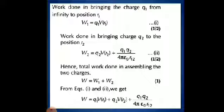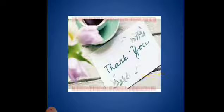The total work done is W1 plus W2, which is q1 into V of r1 plus q2 into V of r2 plus 1 by 4 pi epsilon naught times q1 q2 divided by r12. Hope you have understood. Thank you, dear students.